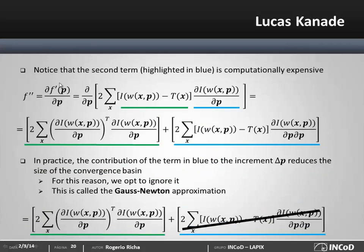In the Baker-Matthews technical report, they say this second derivative degrades tracking performance due to the incorporation of noise. Although it does bring some noise, the real reason it degrades tracking performance is due to the reduction of the convergence basin. So we opt to ignore this second term and not use it in the computation of the update parameters delta p, ending up with the Gauss-Newton approximation of the Hessian.